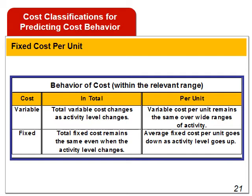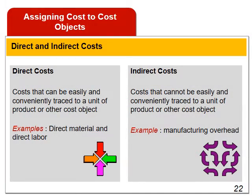It is helpful to think about variable and fixed cost behavior in a 2 by 2 matrix. A cost object is anything for which cost data are desired, including products, customers, jobs, organizational business units, etc. For purposes of assigning costs to cost objects, costs are classified two ways. Direct costs are costs that can be easily and conveniently traced to a unit of product or other cost object — examples include direct material and direct labor. Indirect costs cannot be easily and conveniently traced to a cost object; an example is manufacturing overhead.